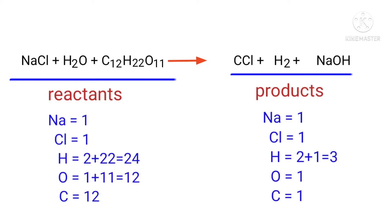If you look at this equation, the equation is not balanced. On the reactants side there are 1 sodium atom, 1 chlorine atom, 24 hydrogen atoms, 12 oxygen atoms, and 12 carbon atoms.